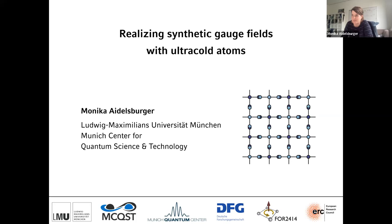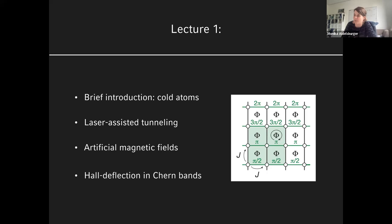Some of the wave packet dynamics and semi-classical description you will see again, which is a very nice connection to the previous lecture. Since this is the only cold atom talk, I wanted to briefly introduce how these systems work, so you get a better idea of the tools available. I'll introduce our platform, the laser-assisted tunneling technique using Floquet theory, which helps us realize artificial magnetic fields and mimic quantum Hall systems, and show how we can use synthetic gauge fields to measure Chern numbers.